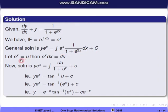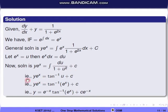Using substitution u = e^x, so e^x dx = du and e^(2x) = u². The integral becomes ∫du/(1 + u²) = tan⁻¹(u) + c. Substituting back: y·e^x = tan⁻¹(e^x) + c, so y = e^(−x)·tan⁻¹(e^x) + c·e^(−x). The correct option is the first one.